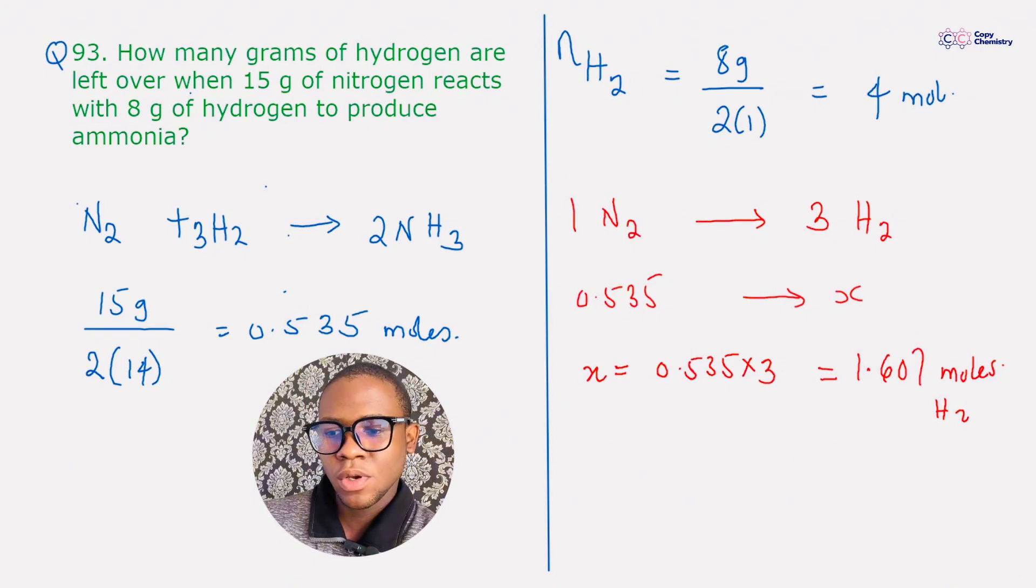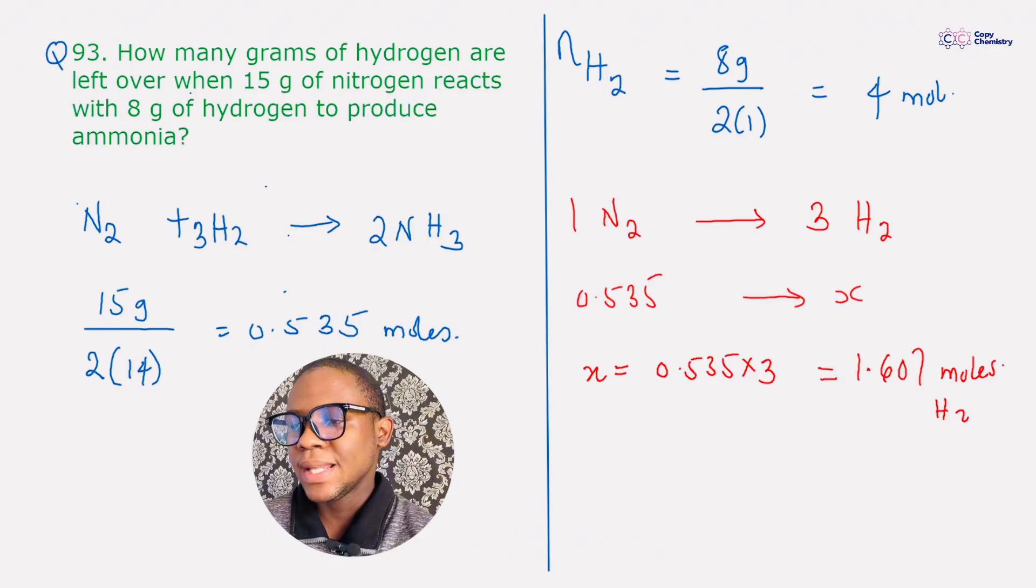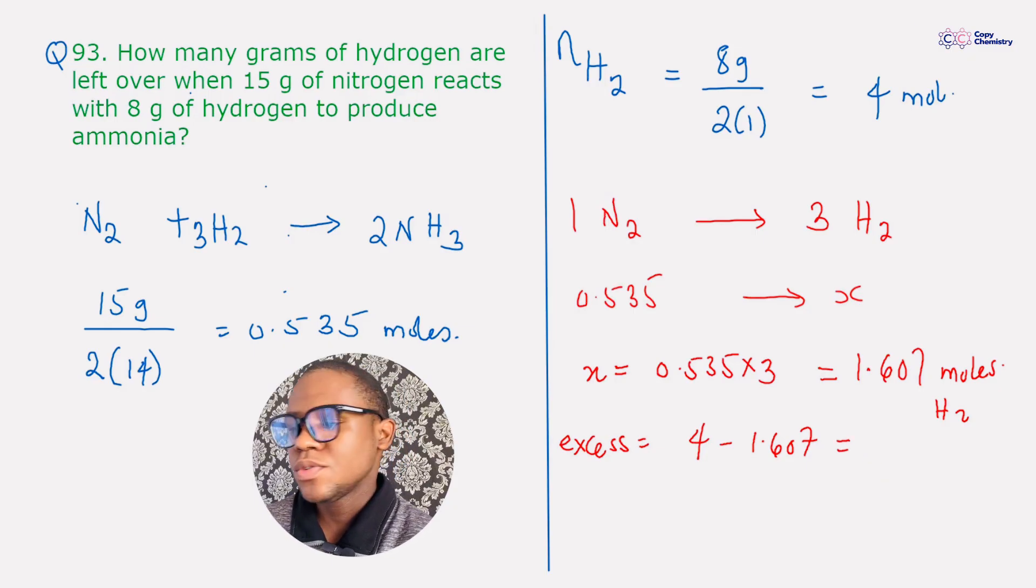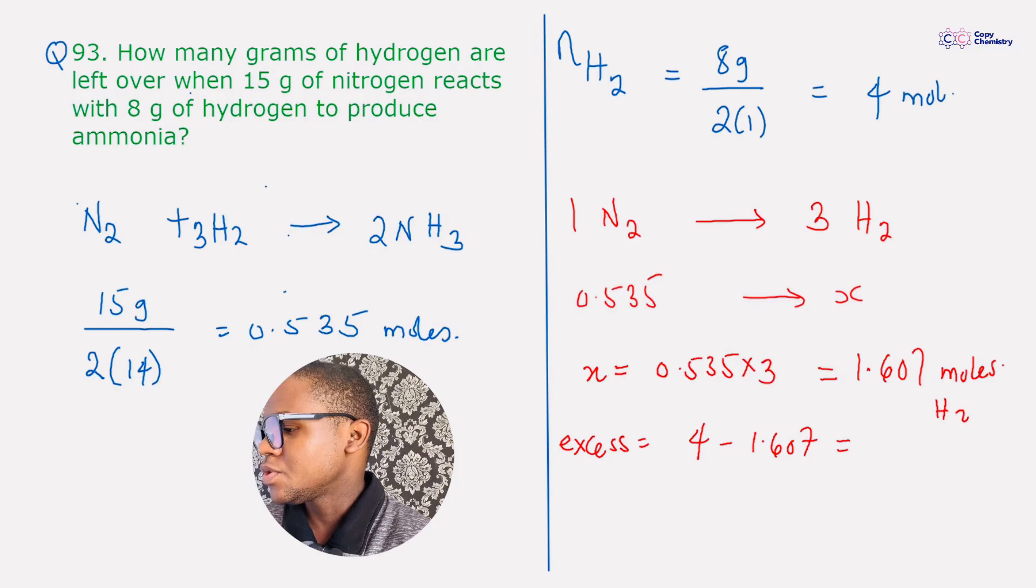So that's the number of moles of hydrogen that should react, but then we have 4, right? We're bringing in 4, only 1.6 is reacting. So what would be left over? What would be left over? Let's calculate by subtraction. So the excess is basically 4 that we had initially minus 1.607 that reacted with the nitrogen. So when you do that subtraction, you should have...